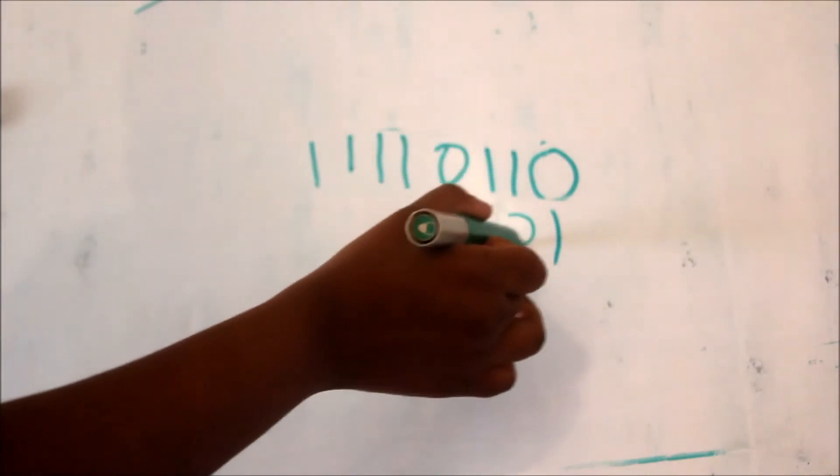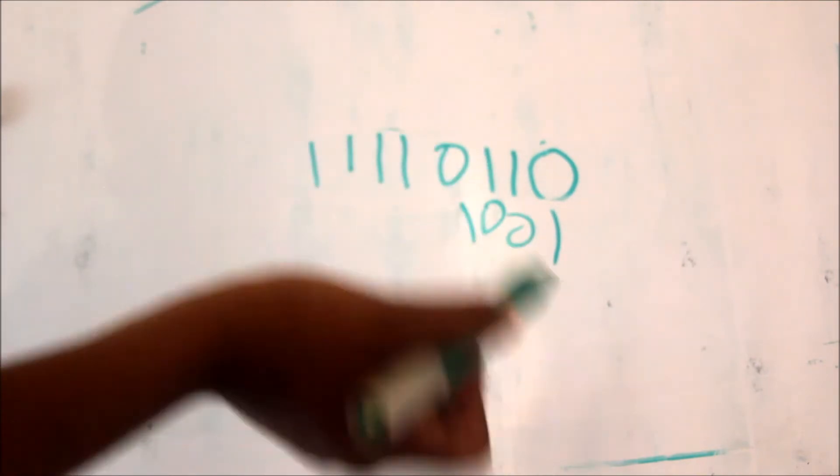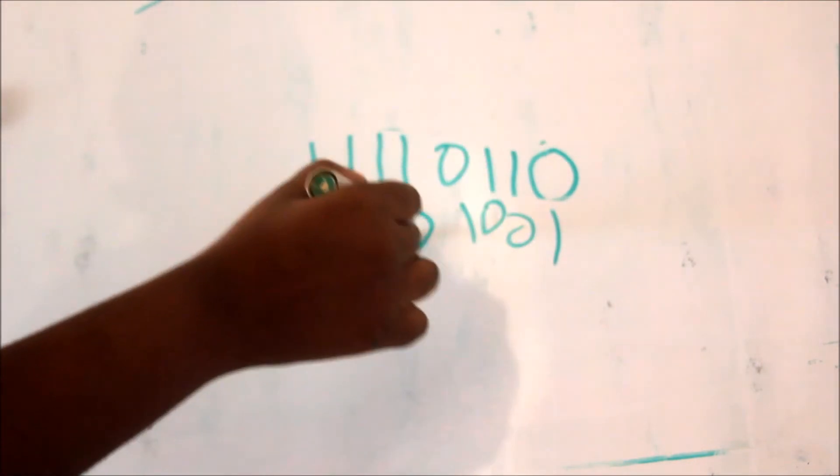And the next step is to swap the 1's and 0's. So, you just go, everywhere there's a 1, you put a 0, and everywhere there's a 0, you put a 1.